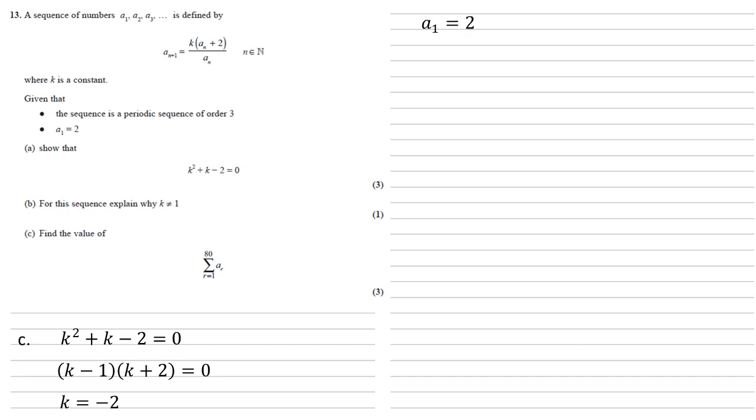So we know that A1 equals 2. Using this A1 equals 2 and our K equals minus 2, we can now find the rest of our values. In part A we worked out that A2 equals 2K. Well 2 times minus 2 is minus 4. In part A we also worked out that A3 is K plus 1, which if we put the minus 2 in gives us minus 1.